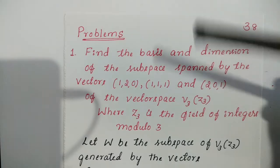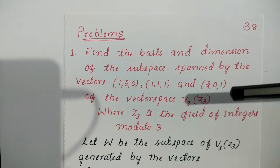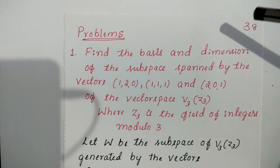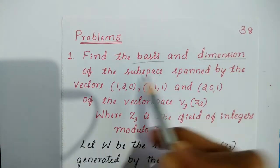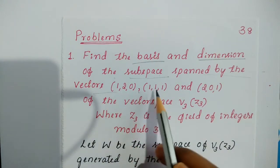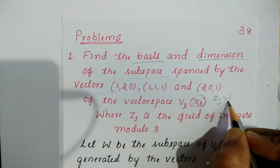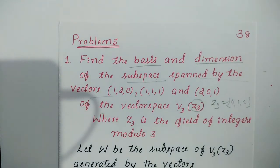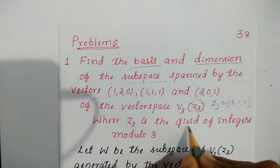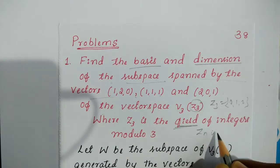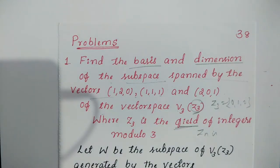The next set of problems are different from previous problems and are very important from an exam point of view. The first problem is: find the basis and dimension of a subspace spanned by the vectors (1,2,0), (1,1,1), (2,0,1) of the vector space V3 of Z3. Z3 means elements {0,1,2} with addition modulo 3 and multiplication modulo 3, where Z3 is the field of integers modulo 3. It is a field because Zn is a field if and only if n is a prime number, and here n=3 which is prime.